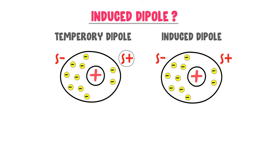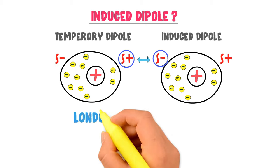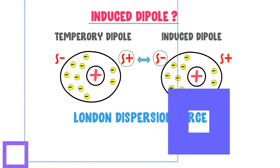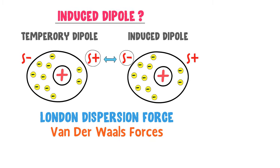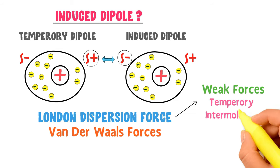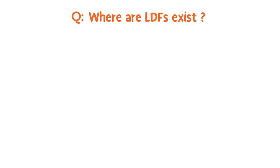The positive end of the temporary dipole attracts the negative end of the induced dipole. This attraction force between these polar molecules is called London dispersion forces, or LDF. London dispersion forces are also called van der Waals forces. Note that London dispersion forces are weak and temporary intermolecular forces between particles. Remember that London dispersion forces are the attractive force between a temporary dipole and an induced dipole.